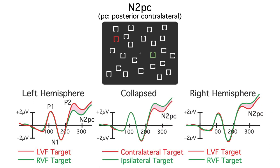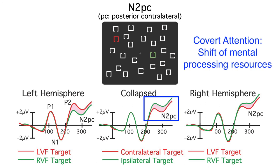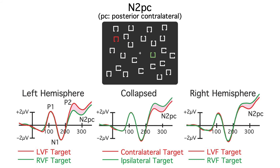We can simplify this by collapsing over the left and right hemispheres. The contralateral waveform is the average of the right hemisphere for the left target and the left hemisphere for the right target. The ipsilateral waveform is the average of the left hemisphere for the left target and the right hemisphere for the right target. The N2PC is defined as the difference in voltage between the contralateral and ipsilateral waveforms. The N2PC allows us to see shifts of covert attention — we can measure a mental operation that occurs entirely in the head and can't be directly observed in behavior. And that's one of the main virtues of the ERP technique: it allows us to observe the neurocognitive processes that lead to behavior but cannot be directly observed in behavior.